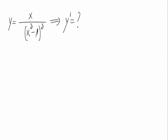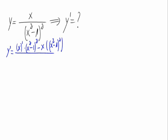Given the function we have on the screen, let's calculate its derivative. We see that we have a quotient, so we apply the formula of the derivative of a quotient, which is the derivative of the numerator times the denominator minus the numerator times the derivative of the denominator, divided by the denominator squared.